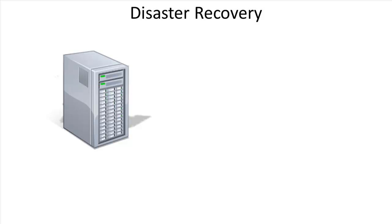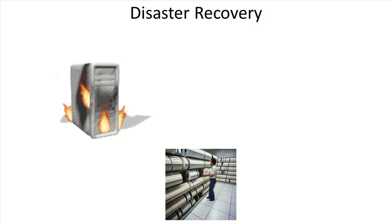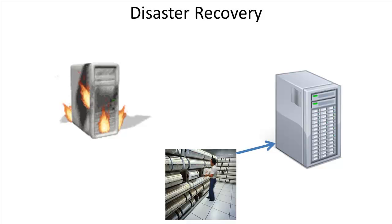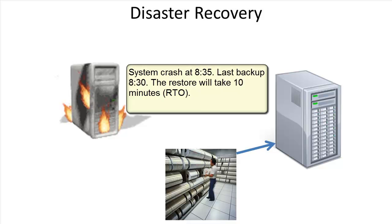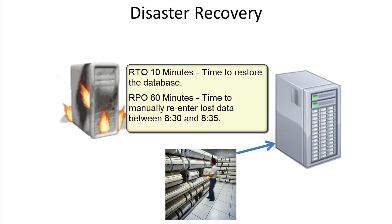In computer terms, if you have a server with critical business functions running fine today, it might have problems in the future — natural disasters can strike. If you've backed up your system, you can restore most or all of your data to a new system. If it takes 10 minutes to restore, your RTO is 10 minutes. If your backup was done at 8:30 and the system went down at 8:35, you lost five minutes of data. If it takes a technician one hour to manually re-enter that data, your RPO is one hour.